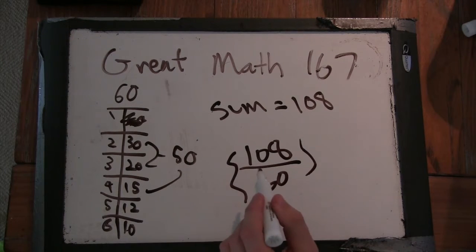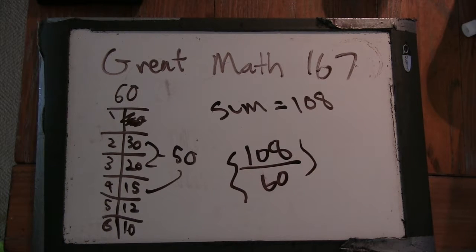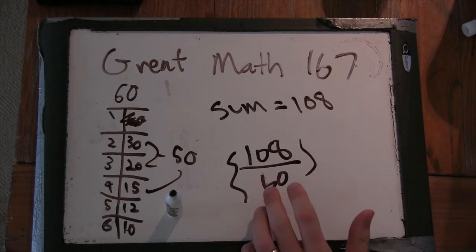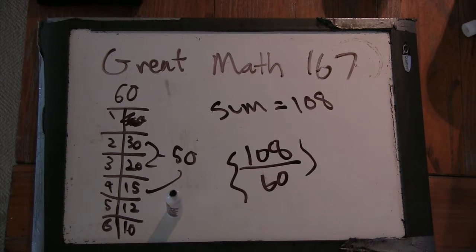And 60, of all the numbers up to 60, this ratio for 60 is the highest. And so 60 is called super abundant. So 60 has the highest, of all the numbers up to 60, 60 has the highest ratio of the sum of the proper divisors to the number.